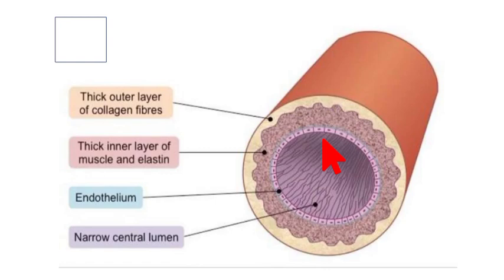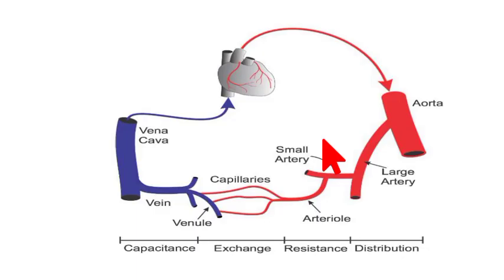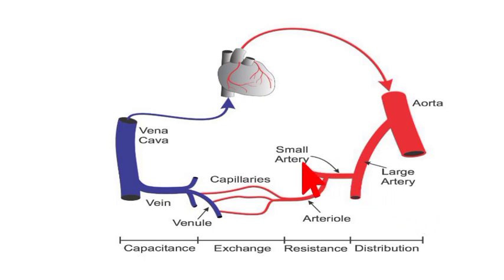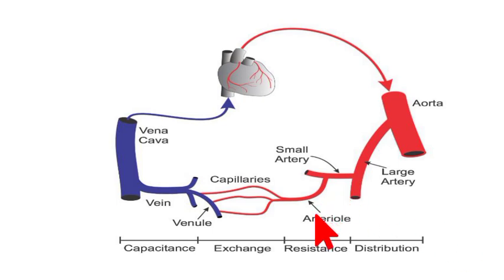The aorta is the largest artery. It is divided into larger arteries and smaller arteries, which are involved in the distribution of oxygenated blood to the body. Arterioles are smaller than arteries and they carry blood to the organs.